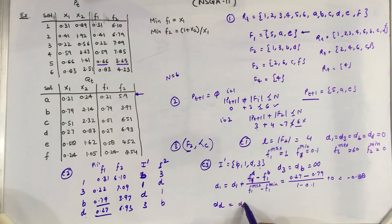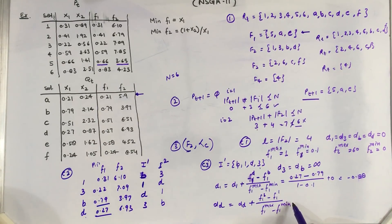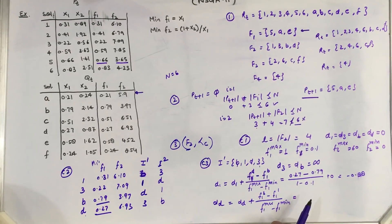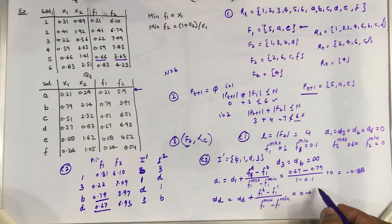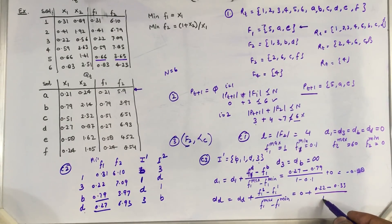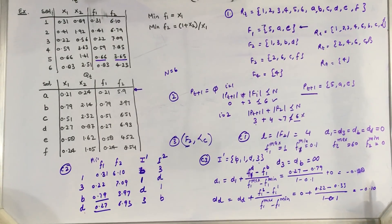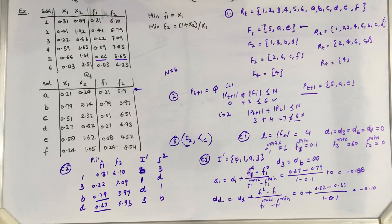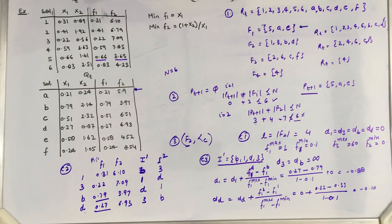Similarly, we calculate D1 based on F1: [F1(3) minus F1(1)] divided by [F1_max minus F1_min]. Now we also consider the second objective function.